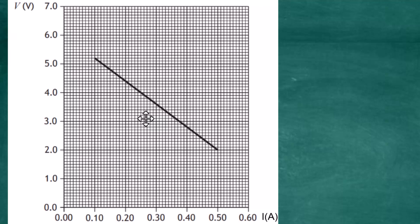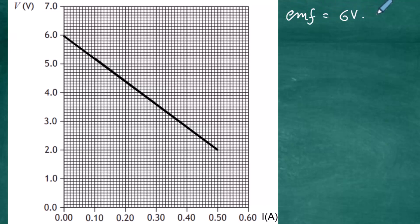To find the EMF from the graph, we know it equals the terminal potential difference when there's no current drawn. We extend the line back until it cuts the y-axis, the voltage axis. It cuts at six volts — at zero current we get six volts. So the EMF, the electromotive force, equals six volts. That's part one done for one mark.